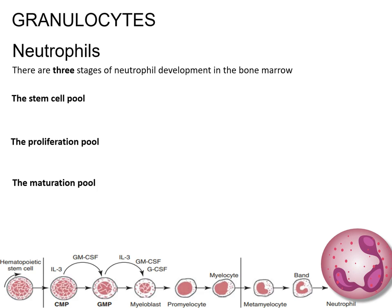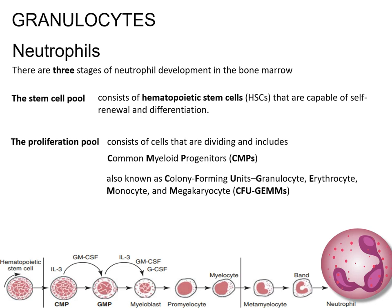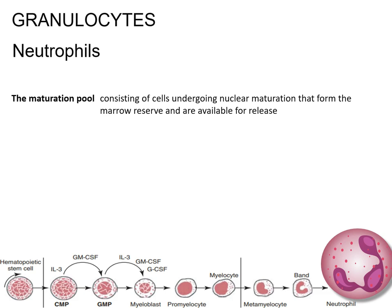The stem cell pool consists of hematopoietic stem cells capable of self-renewal and differentiation. The proliferation pool consists of dividing cells and includes common myeloid progenitors, also known as colony-forming units granulocyte, erythrocyte, monocyte, and megakaryocyte; granulocyte macrophage progenitors; myeloblasts; promyelocytes; and myelocytes. The maturation pool consists of cells undergoing nuclear maturation that form the marrow reserve and are available for release: metamyelocytes, band neutrophils, and segmented neutrophils.